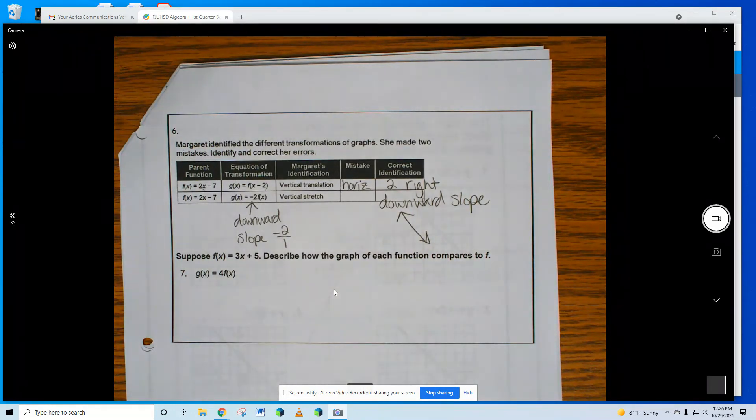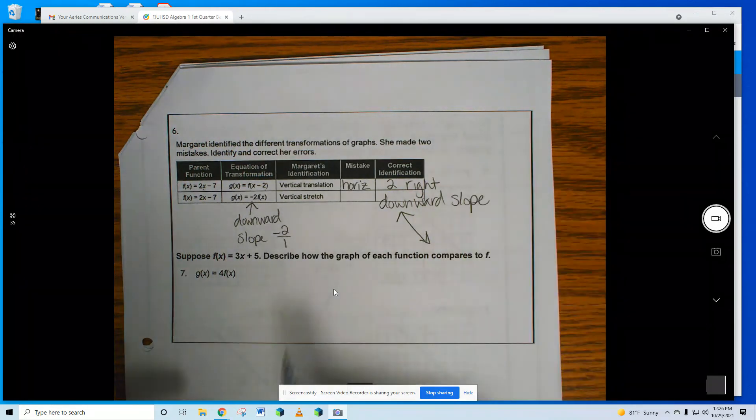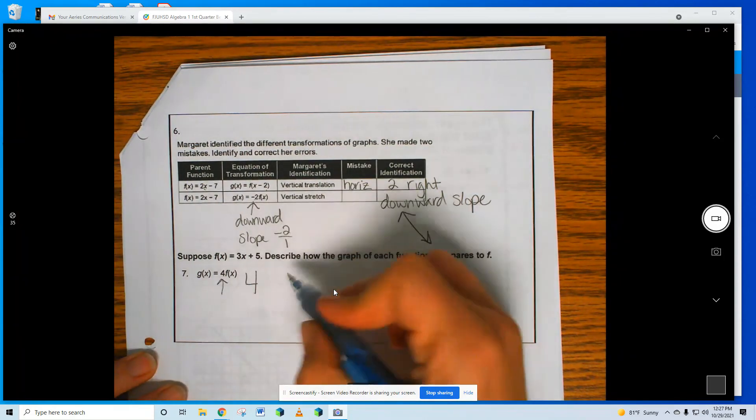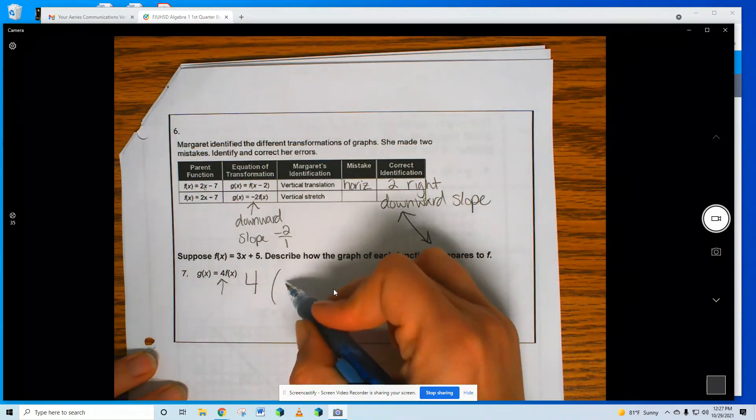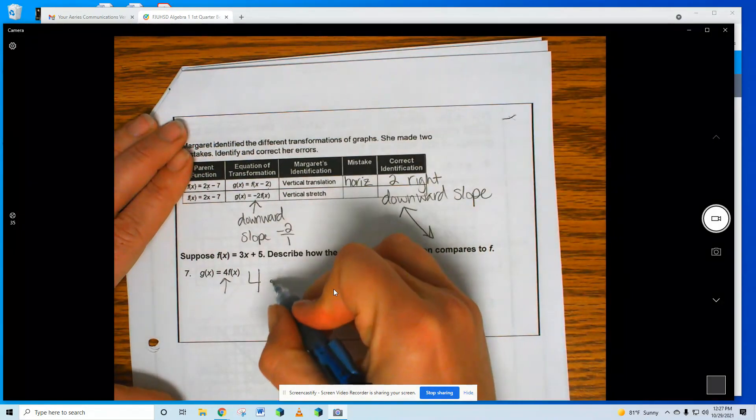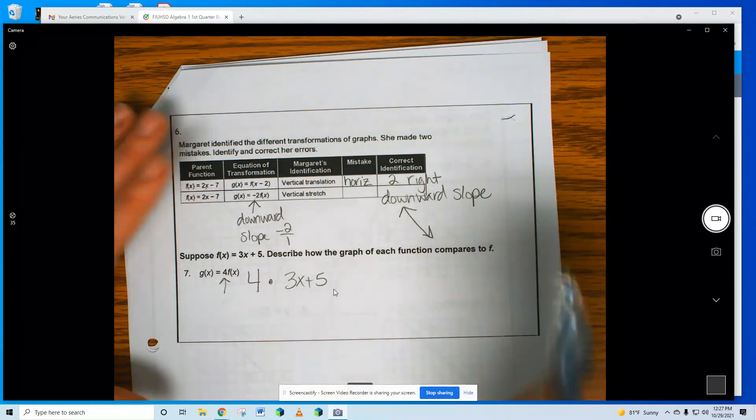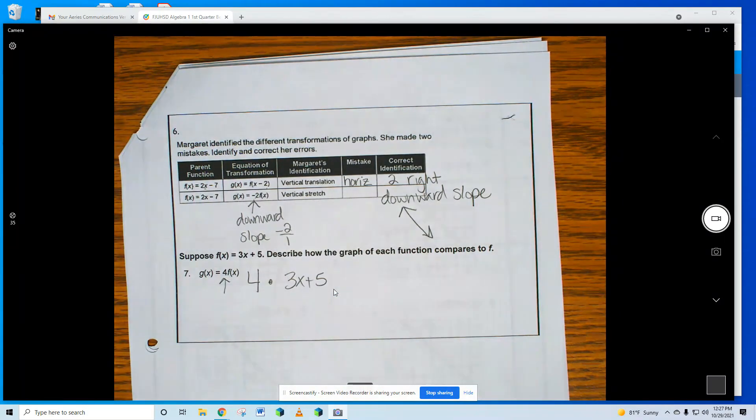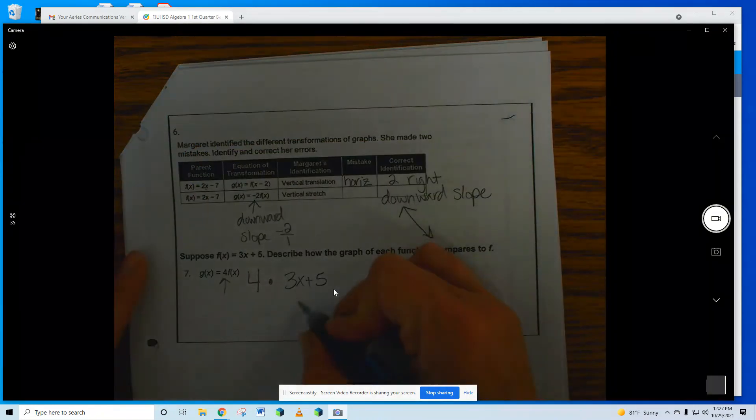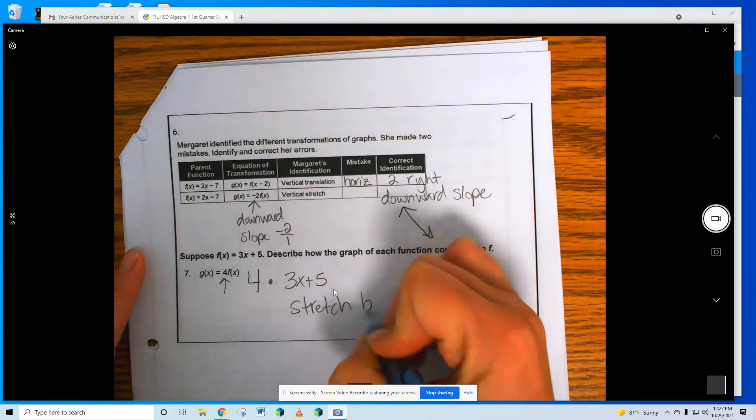Suppose, number 7, suppose that f(x) equals 3x plus 5. Describe how the graph compares to f. What does a 4 do if I put a 4 in front of 4 times this 3x plus 5? What's a 4 going to do? It already has a 3, and now I'm putting a 4 on it. Stretch. Good. Stretch by 4.